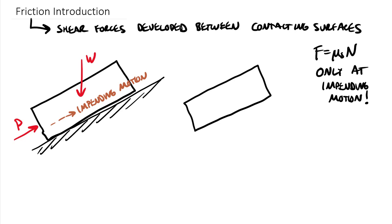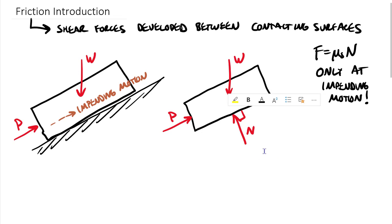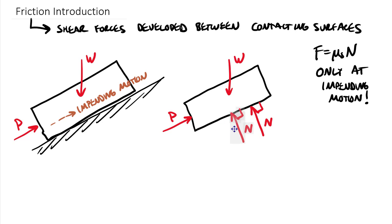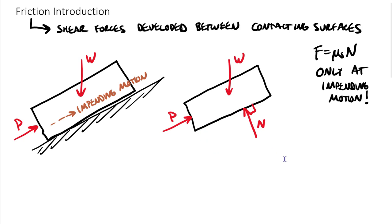Coming back to our free body diagram: our weight force always pulls toward the center of the earth, and we have an external pushing force up the ramp. One thing to highlight is that normal forces are normal to a surface. Normal forces are not always going through the centroid of a body. This normal force would likely be somewhere down here if we pushed hard enough — it can move in this direction. The reason normal forces actually move is that they come from a distributed load.